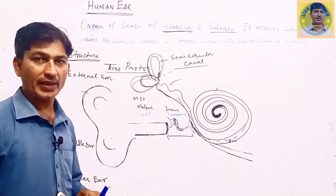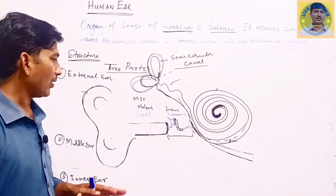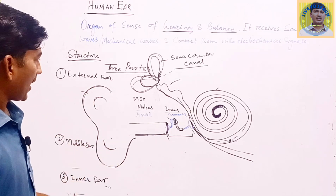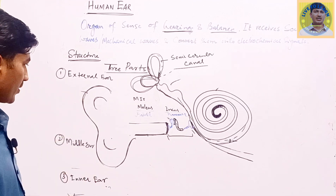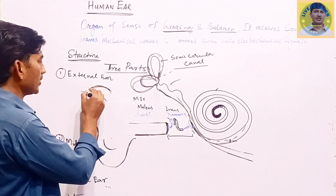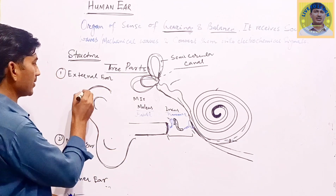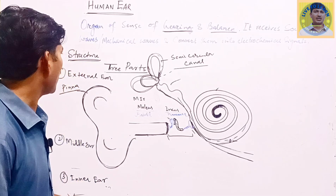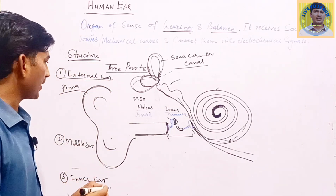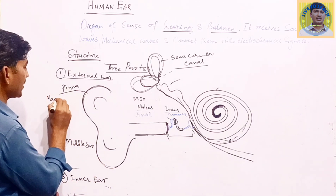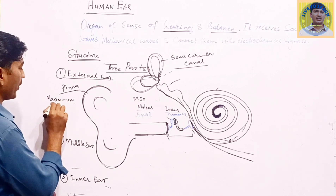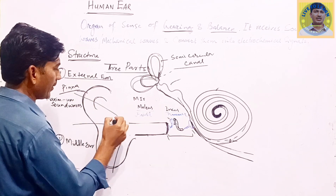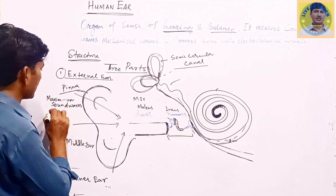So the human ear has been divided into three parts: external ear, middle ear, and inner ear. I have drawn a picture already so the video takes less time. With the help of this diagram I will explain the external, middle, and internal structures of the ear. The first structure you see from the external side is called the pinna. This external structure visible from the outside is called the pinna, and it is part of the external ear. The function of the pinna is to collect maximum sound waves — it gathers the sound waves coming from the external environment.